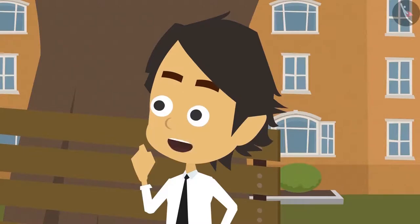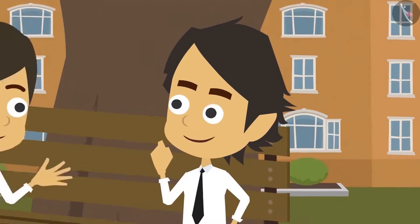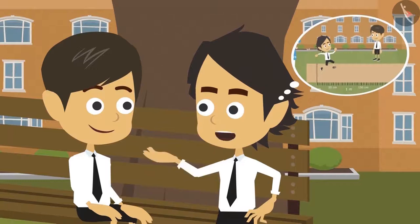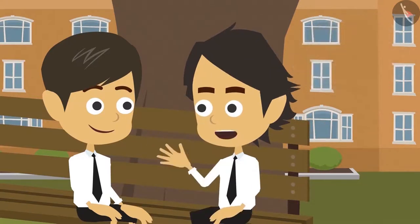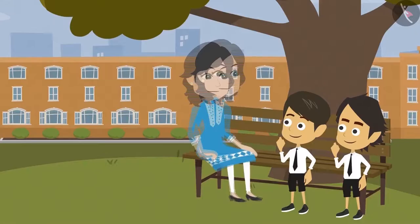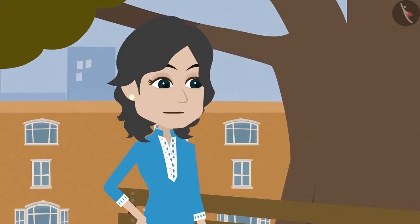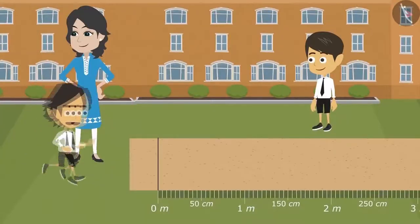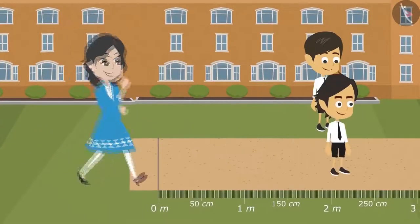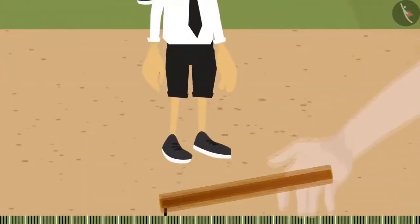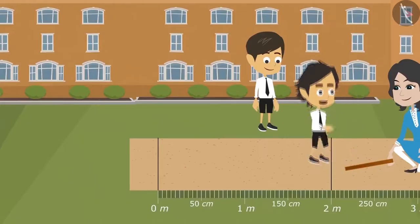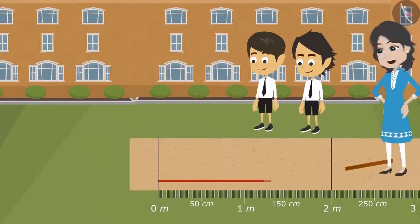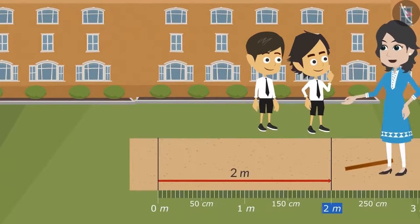Now I understand. Why is long jump measured in meters? Because a long jump will definitely be longer than 100 centimeters, so it makes it easier and practical to measure a long jump in meters. Now we have had a lot of talks — come, jump and show so that we can measure it. Okay. I will jump first. How long did I jump? Let's measure it. You have jumped 2 meters, Ayushman.